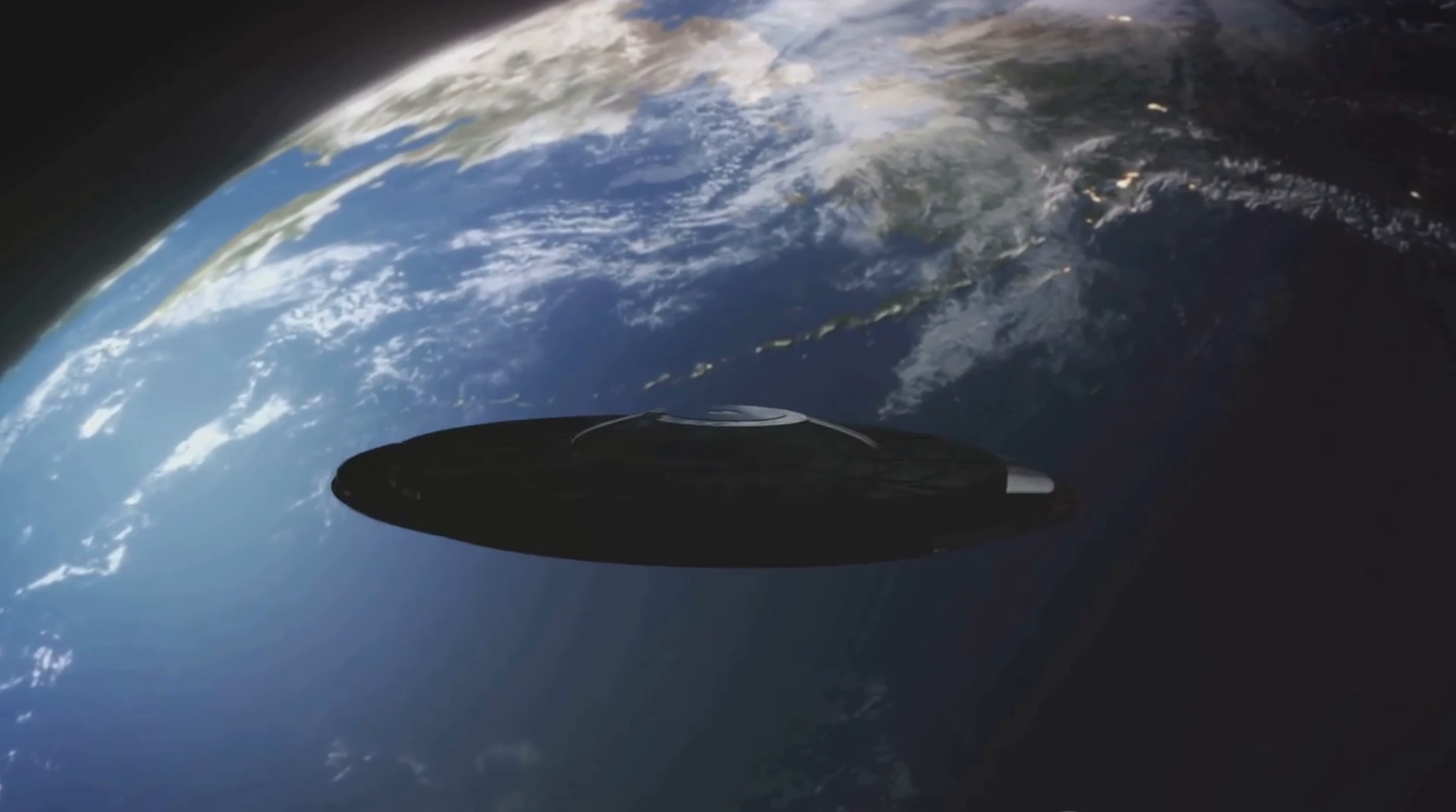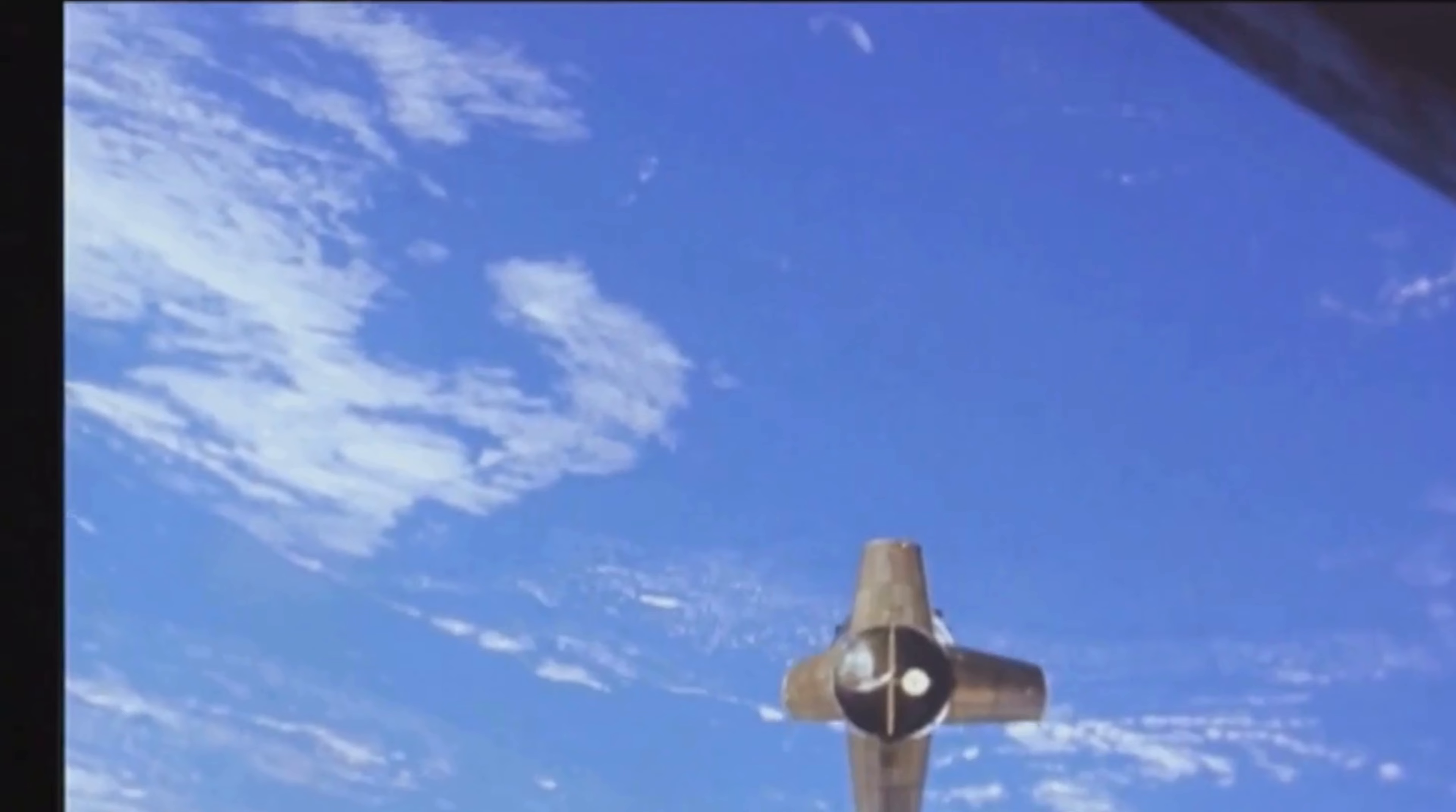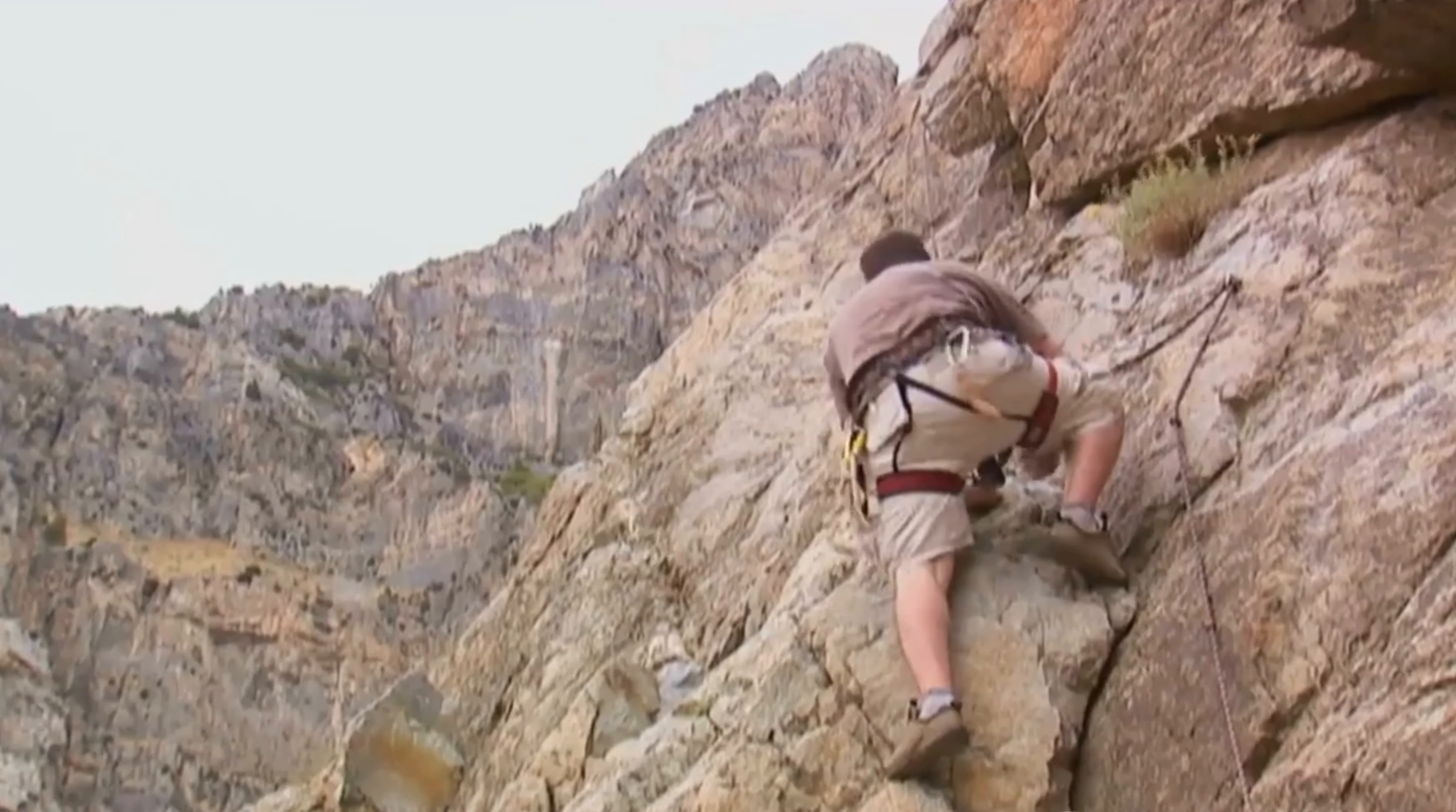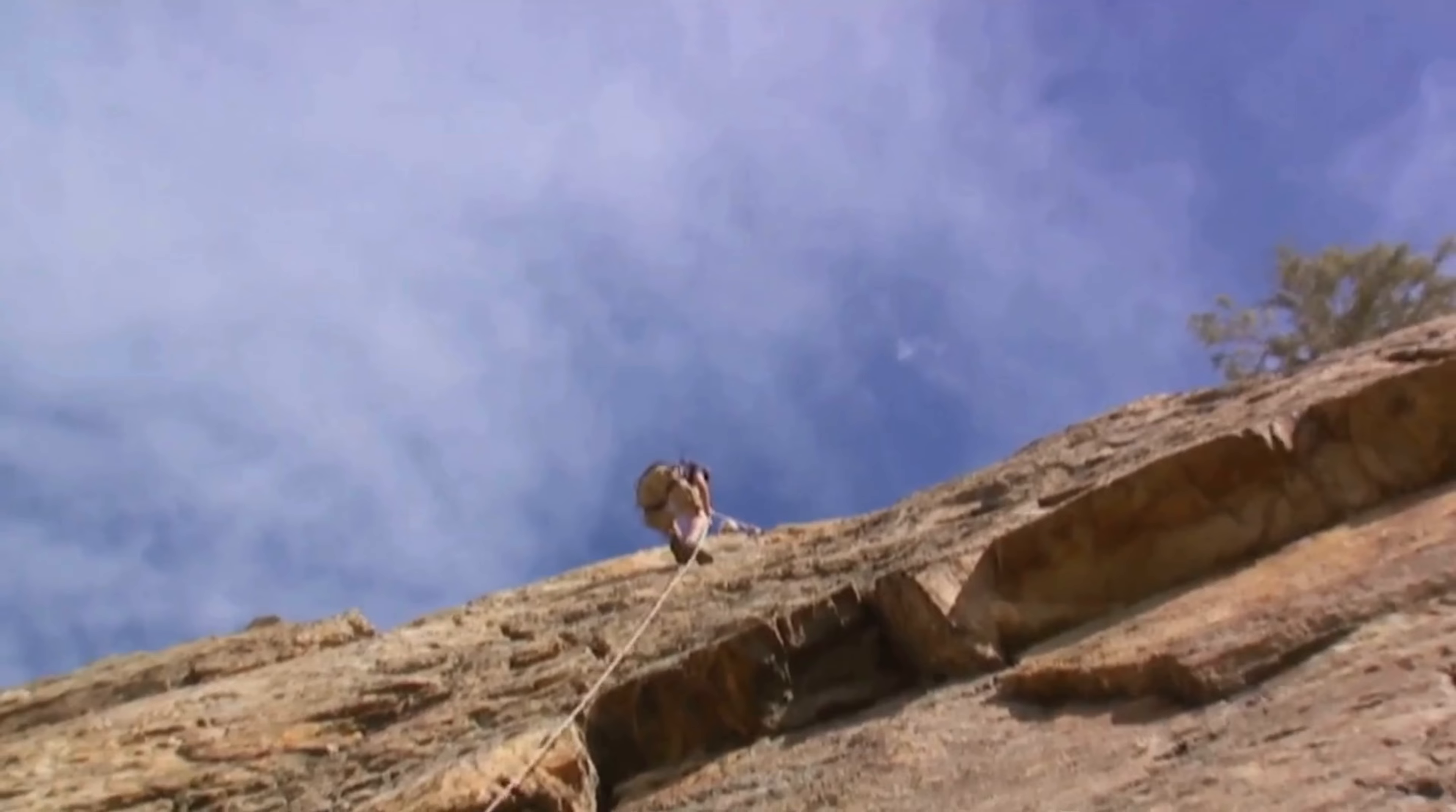A flat Earth would mean a complete reimagining of our understanding of gravity. Instead of pulling everything towards the center, gravity would pull straight down. This would make climbing a mountain, for instance, a significantly different experience. As you ascend, you would not lean into the mountain but remain perpendicular to the ground, making the climb more strenuous and disorienting.